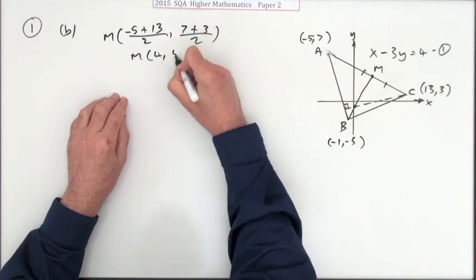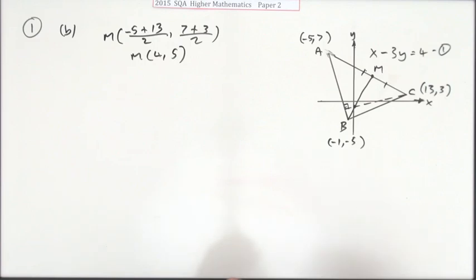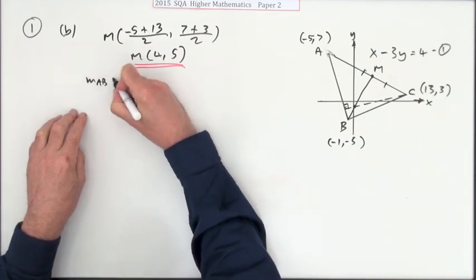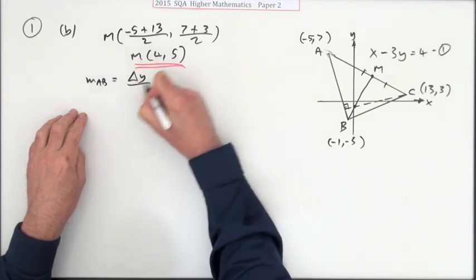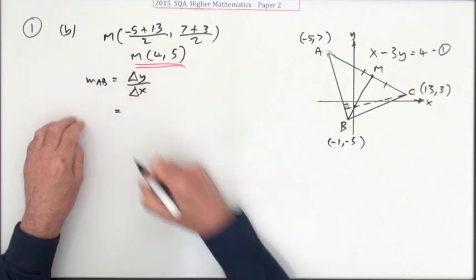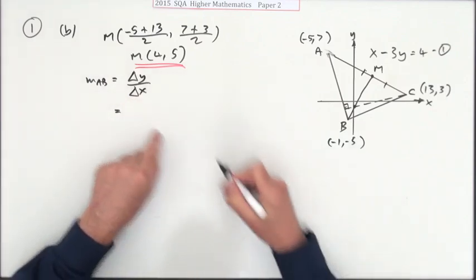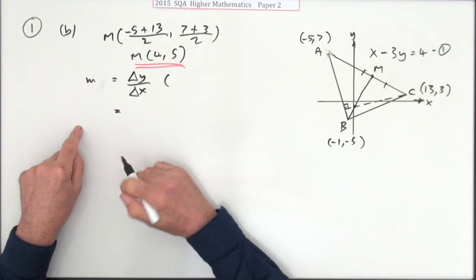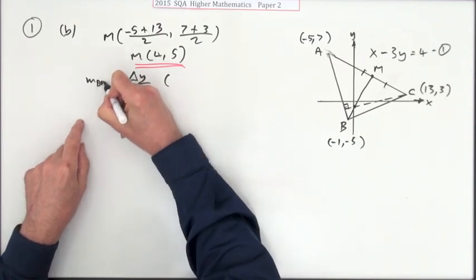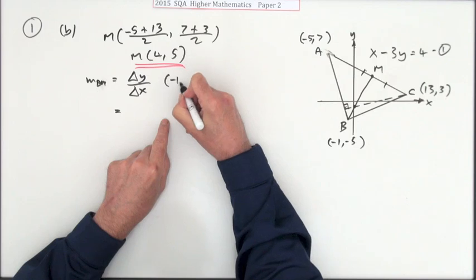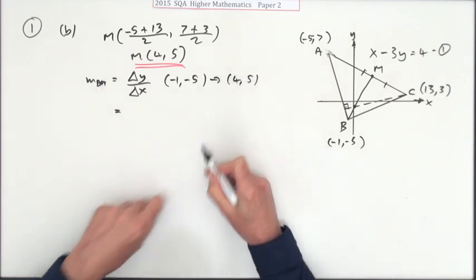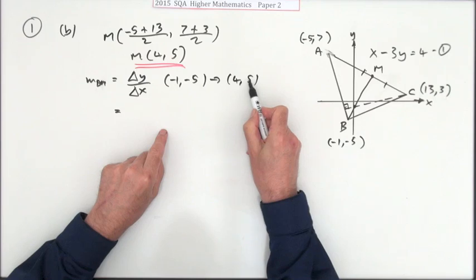Next I need the gradient. What's the gradient of BM? That'll be the difference in the y coordinates over the difference in the x coordinates. I've got it, maybe this time I'll just set it out. The gradient of BM, so B is at negative 1, negative 5 and it's going to M which is at 4, 5. It's always handy to set it like that. So difference in the y's, y₂ minus y₁, 5 take away negative 5.